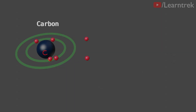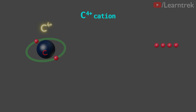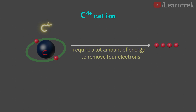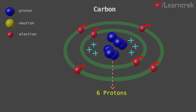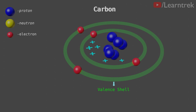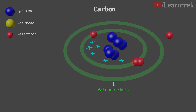If carbon loses 4 electrons and forms a C4+ cation, then it would require a large amount of energy to remove 4 electrons. If carbon loses its valence shell electrons one by one, then the net effect of the protons' positive charge on the remaining electrons would increase, and the remaining electrons will be more strongly attracted towards the nucleus. As a result, the remaining last two valence shell electrons will require a lot of energy to remove in comparison to the first two, and the last valence shell electron will require the most energy of all.